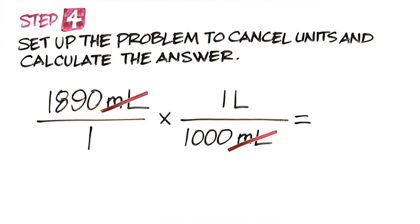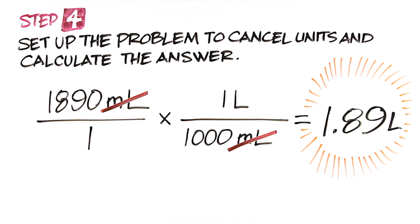So now you have a straightforward division problem. 1,890 times 1 divided by 1 times 1,000, or 1,890 divided by 1,000. The answer is 1.89 liters.